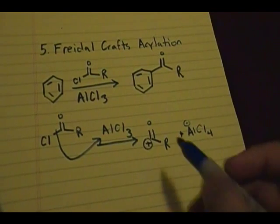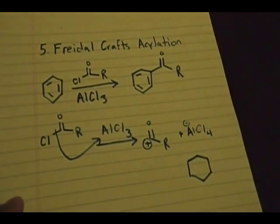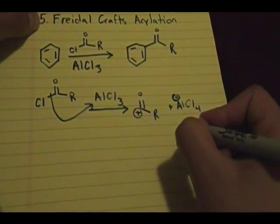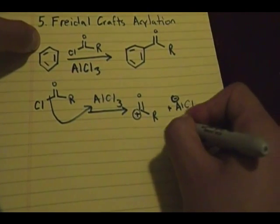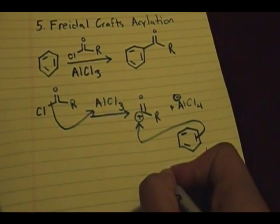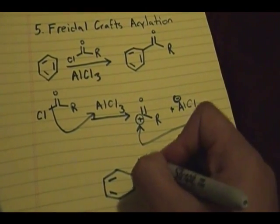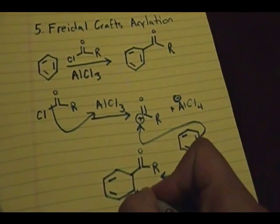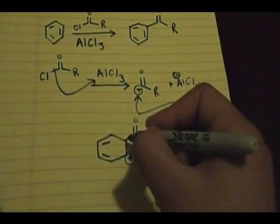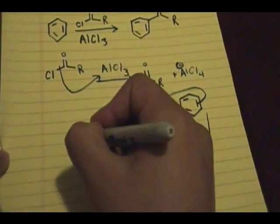That's the intermediate formed in Friedel-Crafts acylation. Now you have your aromatic ring, and a pair of electrons from the aromatic ring attack the carbon with the positive charge. The result of this step is the aromatic ring with the acyl group attached and a positive charge. Then elimination occurs — the hydrogen forms a double bond — and you regenerate your aromatic ring.